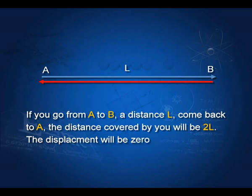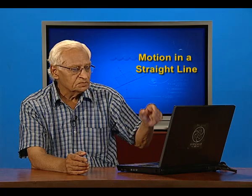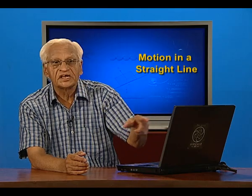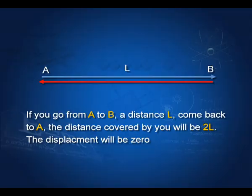If you go from A to B and back from B to A, your distance covered would be twice the distance between A and B, that is 2L, whereas the displacement would be 0, because you started from A and have come back to point A.